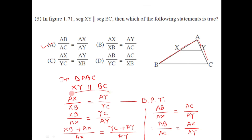By the Basic Proportionality Theorem we get AX/XB = AY/YC, but this is not among the given alternatives. So we made some adjustments to arrive at AB/AC = AX/AY, which is option A — the correct alternative. This is how we can solve multiple choice questions using basic concepts from the topic of Similarity.